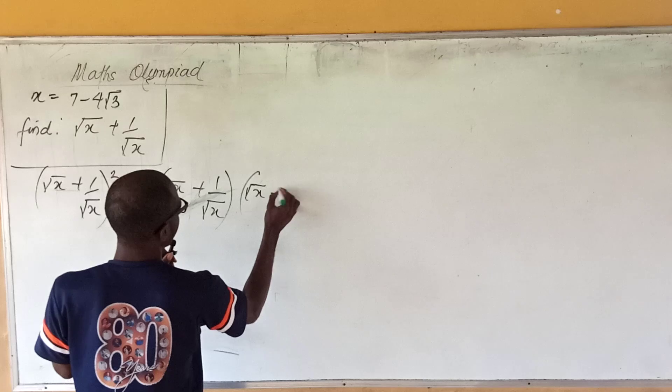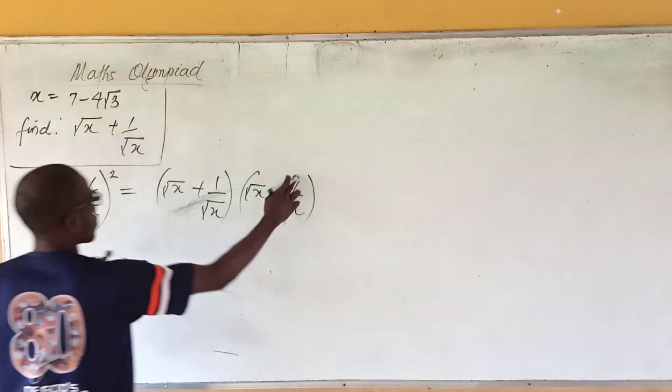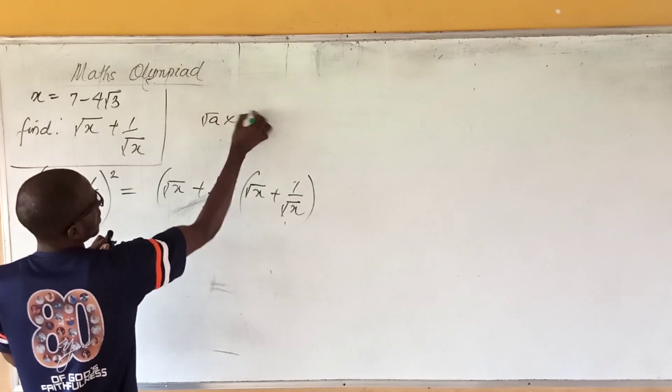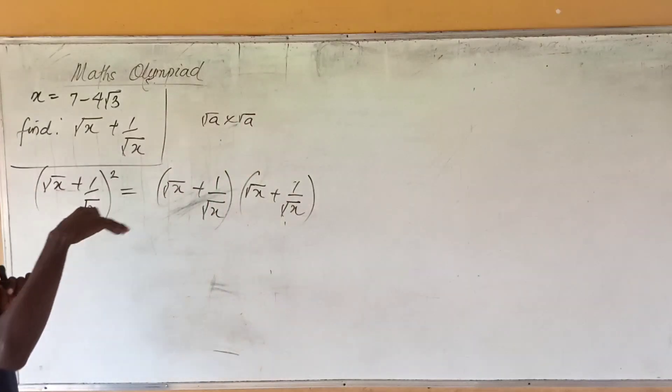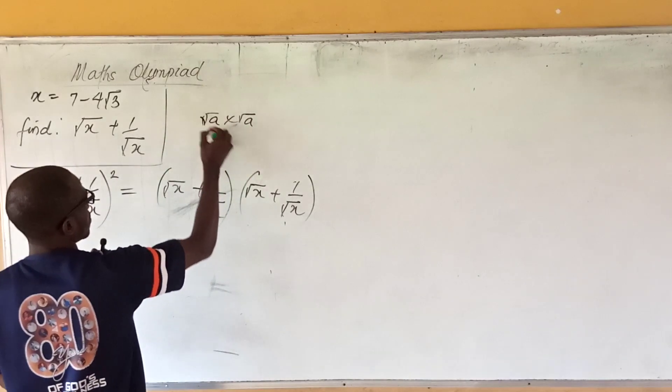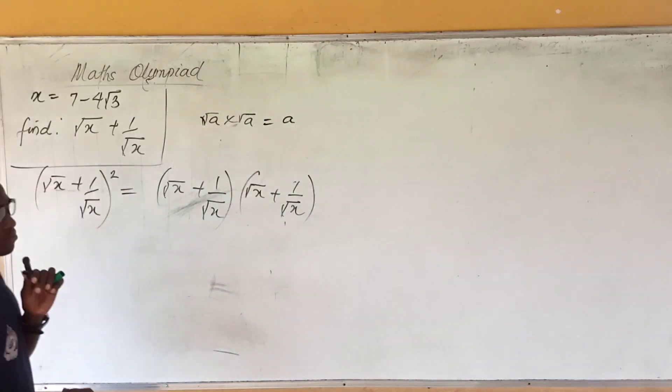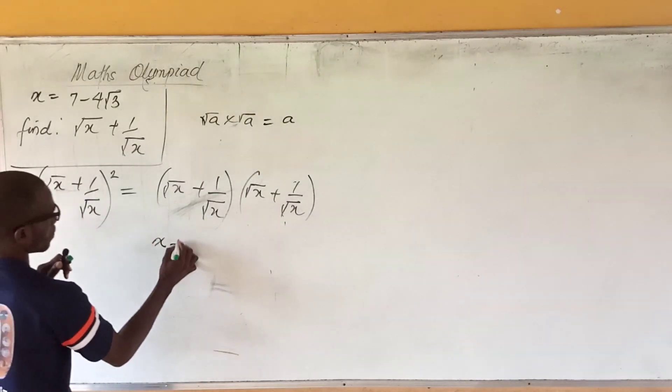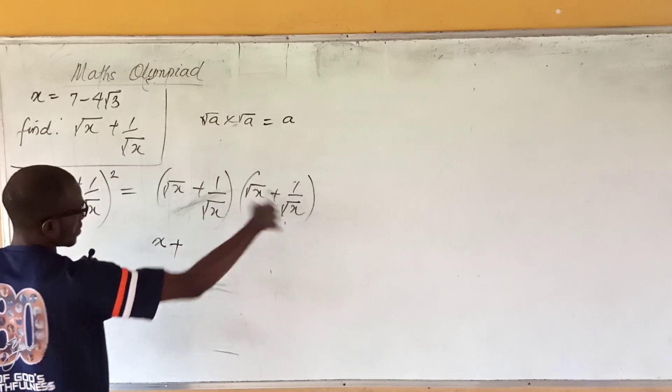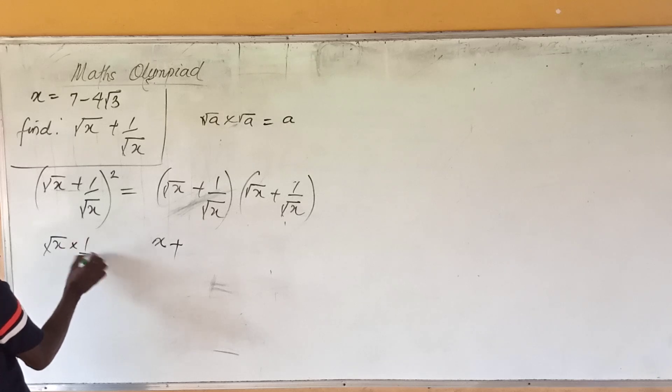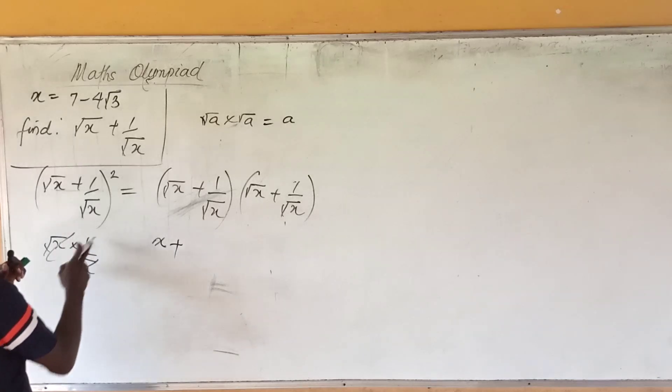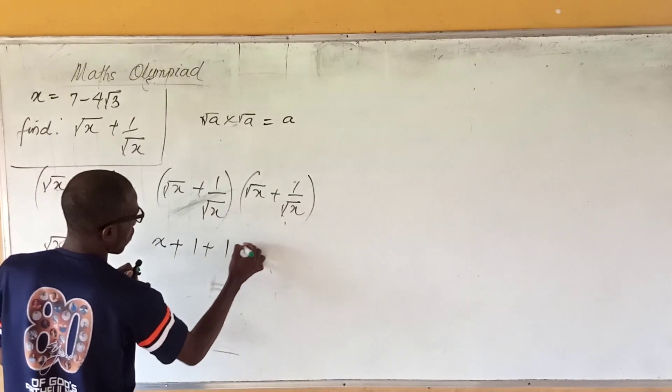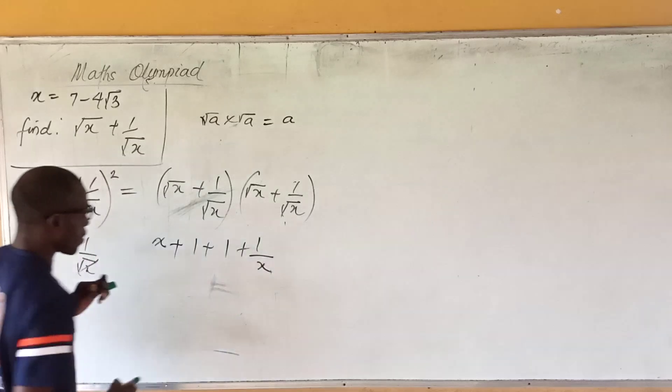All right, so these are two brackets from the squaring. √a times √a will give you a isn't it. So √x times √x will give x. Plus this times this, I mean √x times 1/√x, so that gives me 1. We have 1 plus this times this gives me 1 again and this times this gives me 1/x.